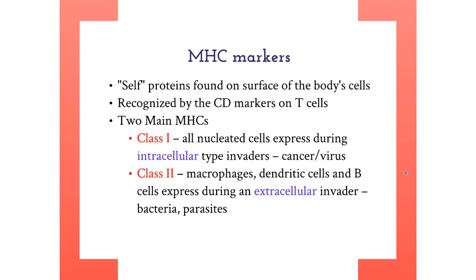The second surface marker on the T cell is the CD marker. CD markers on T cells are used to recognize MHC proteins on host cells. MHC molecules are self-proteins used by APCs, antigen-presenting cells, to present antigens to the T cells. There are two classes of MHC molecules: MHC class 1 and class 2.